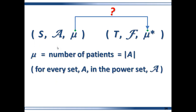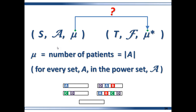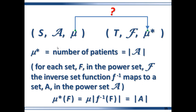Let's do an example. Mu equals the number of patients in each set in sigma algebra A. So mu equals 1 for the singleton set, mu equals 3 for one set, mu equals 2 for another, mu equals 4 for the full set, and by definition mu equals 0 for the empty set. Then mu-star is a measure that also assigns to sets the number of patients in each set, but it assigns this number to sets in sigma algebra F — the sigma algebra of the conditions. The corresponding set is the one that the inverse set function maps from F to A.